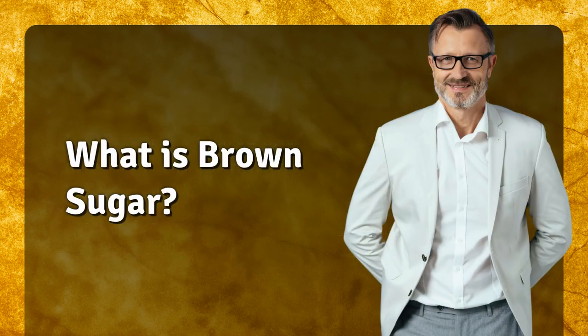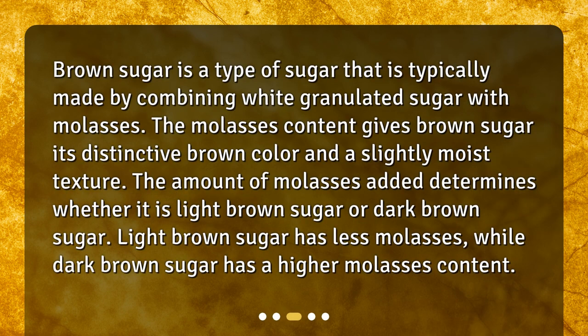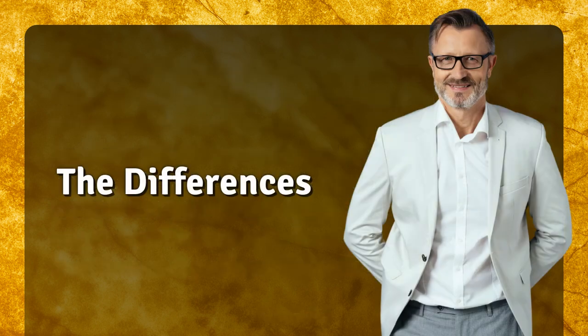Brown sugar is a type of sugar that is typically made by combining white granulated sugar with molasses. The molasses content gives brown sugar its distinctive brown color and a slightly moist texture. The amount of molasses added determines whether it is light brown sugar or dark brown sugar — light brown sugar has less molasses while dark brown sugar has a higher molasses content.